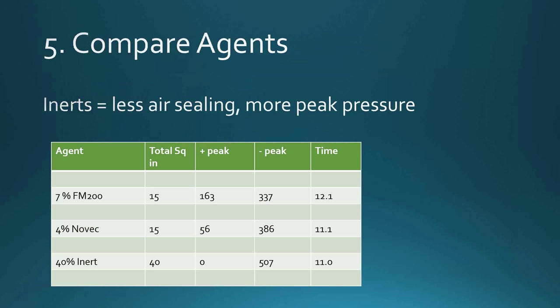Next is to compare agents. We can run all agents in our software in the design phase. When looking at helicarbons, they require much tighter enclosures to achieve the same retention time — for example, 15 square inches of leakage versus 40 for inerts, almost three times tighter. The peak pressure values are a little bit smaller for helicarbons, but not a lot — and if humidity is lower, they could be at the same level as inerts.